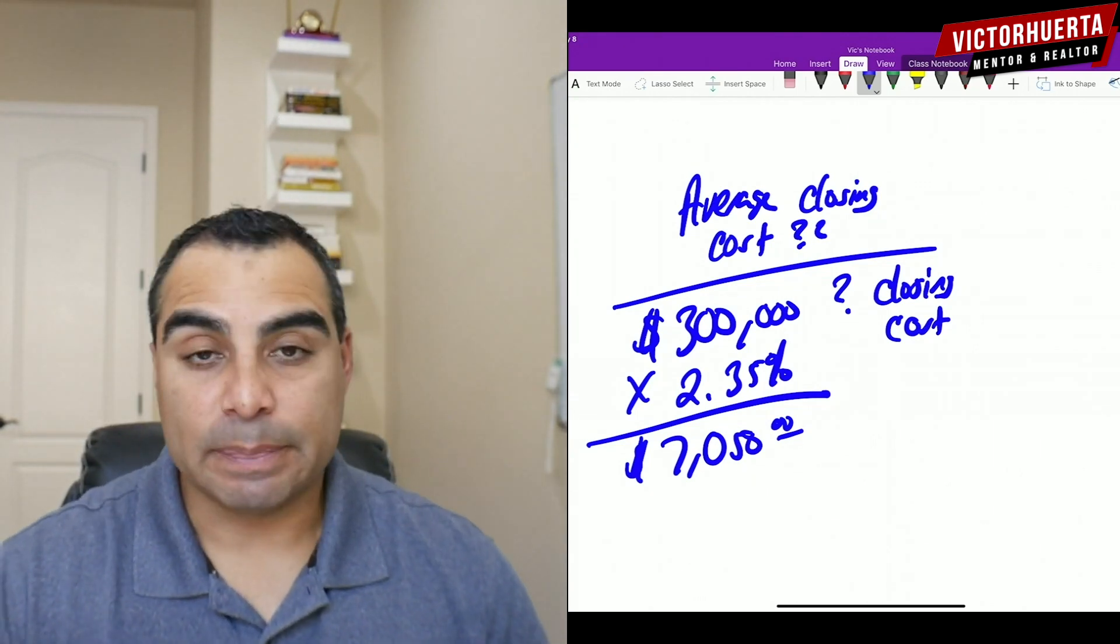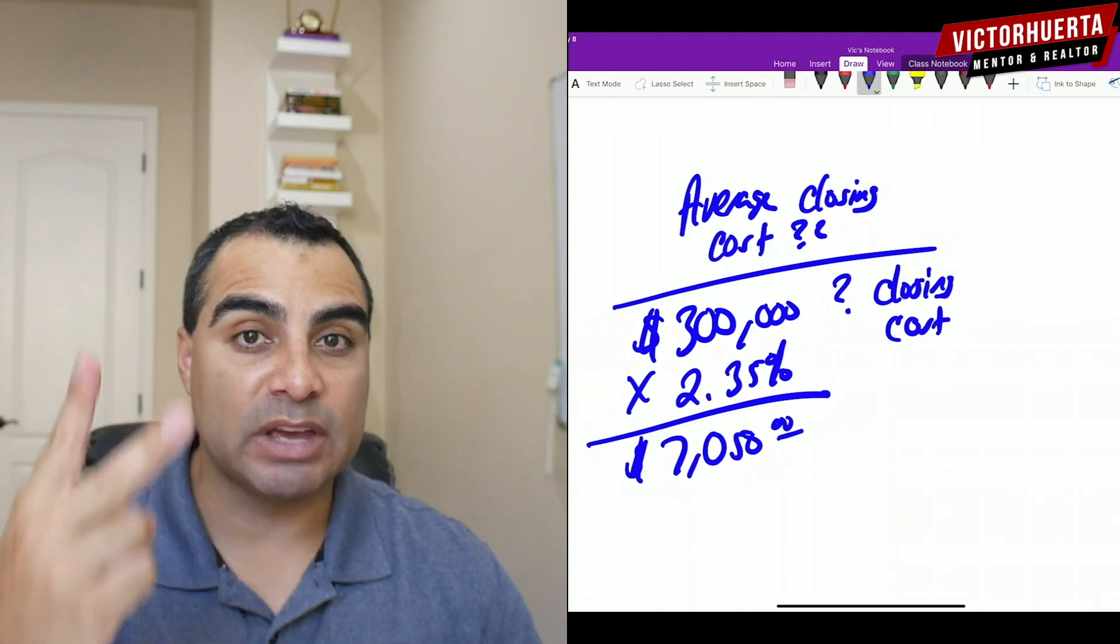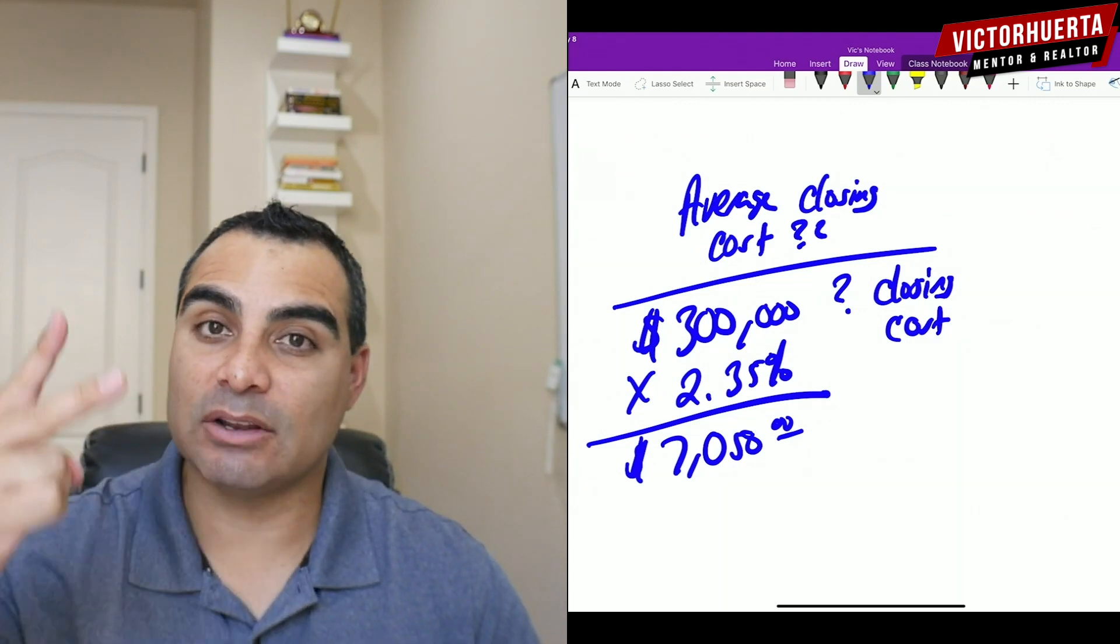Now, this math right here depends on the loan, whether you're using an FHA loan, a conventional loan, it's all going to depend. It's going to depend on your lender. It's going to depend on your title company.